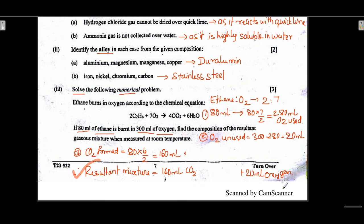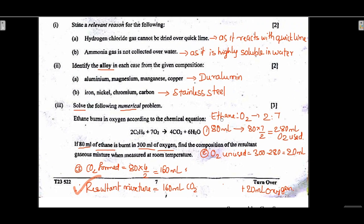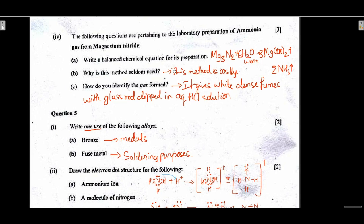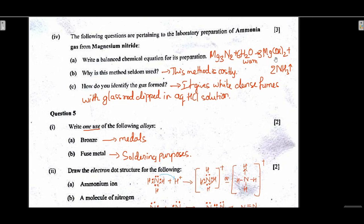Question: ammonia gas from magnesium nitride. Balanced equation: Mg3N2 + 6H2O → 3Mg(OH)2 + 2NH3. This method is seldom used because it is costly. To identify the gas formed, ammonia gives white dense fumes with a glass rod dipped in aqueous HCl solution.